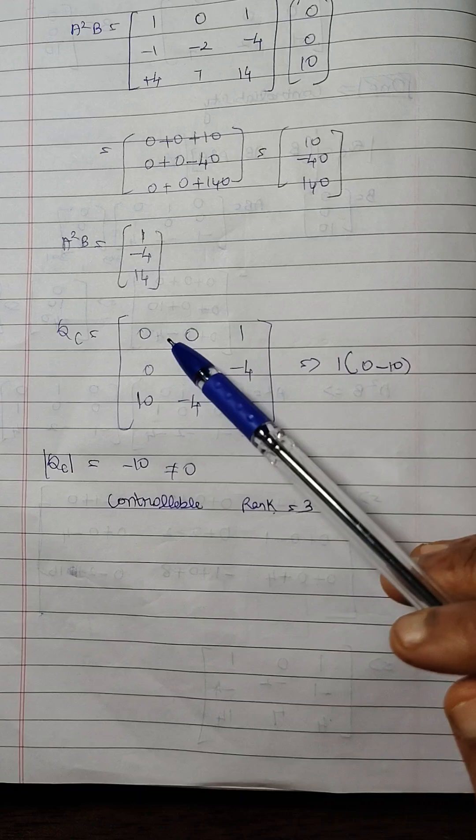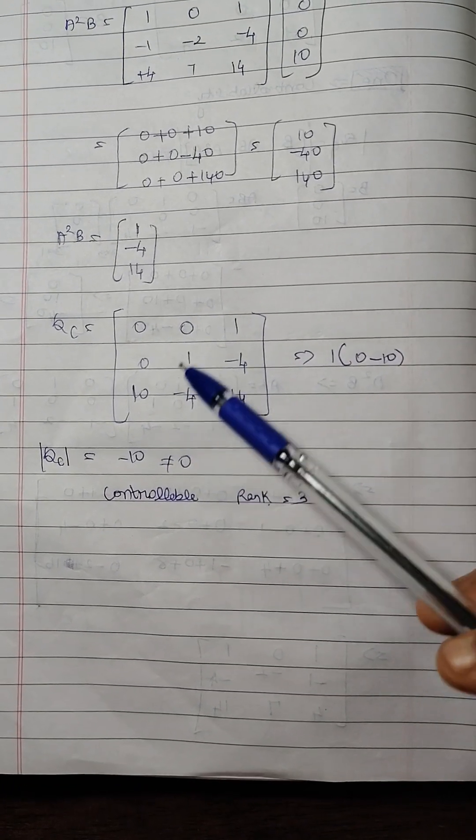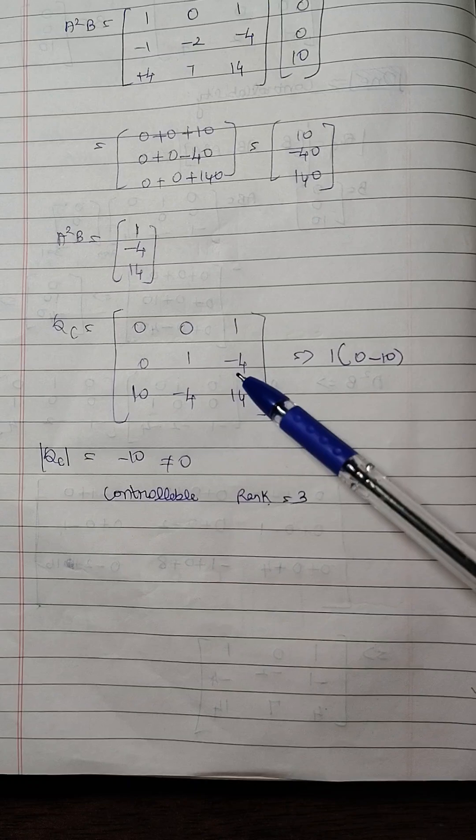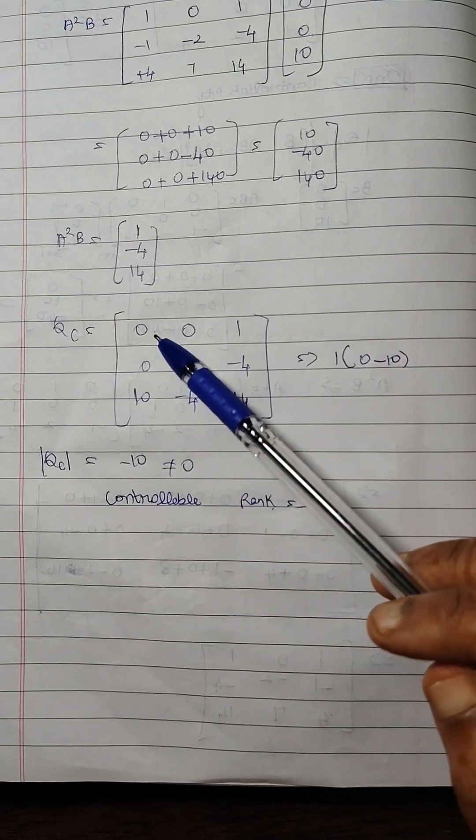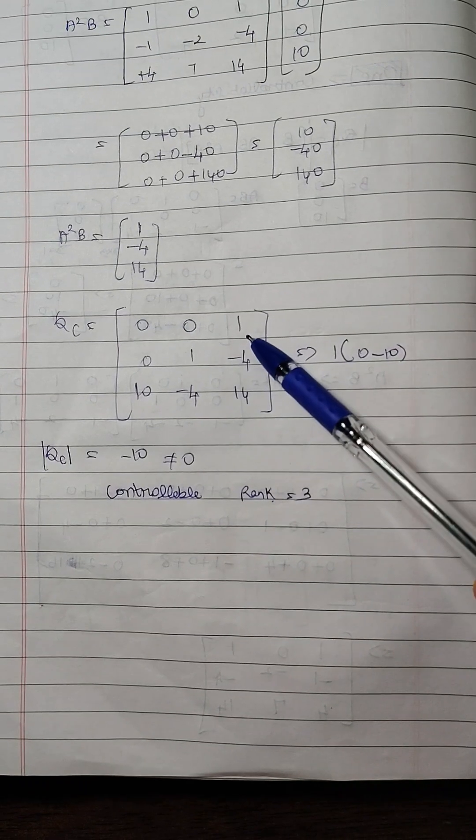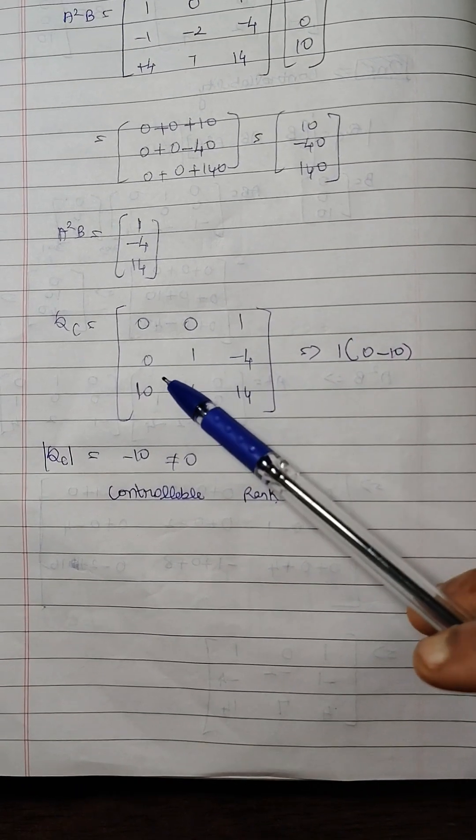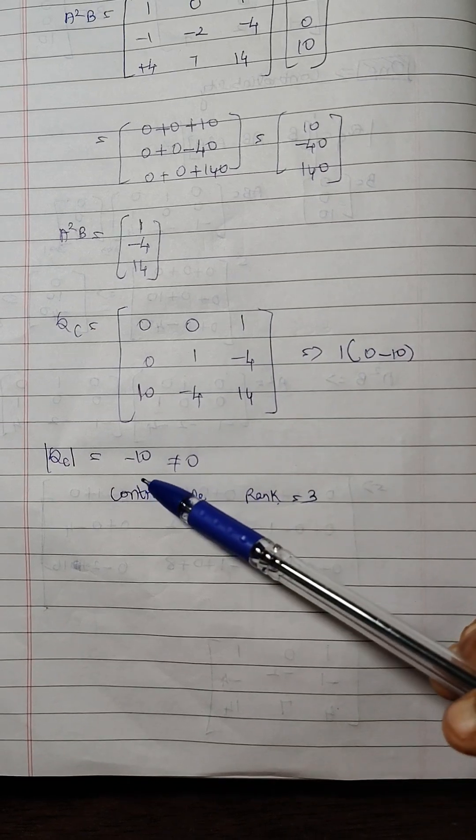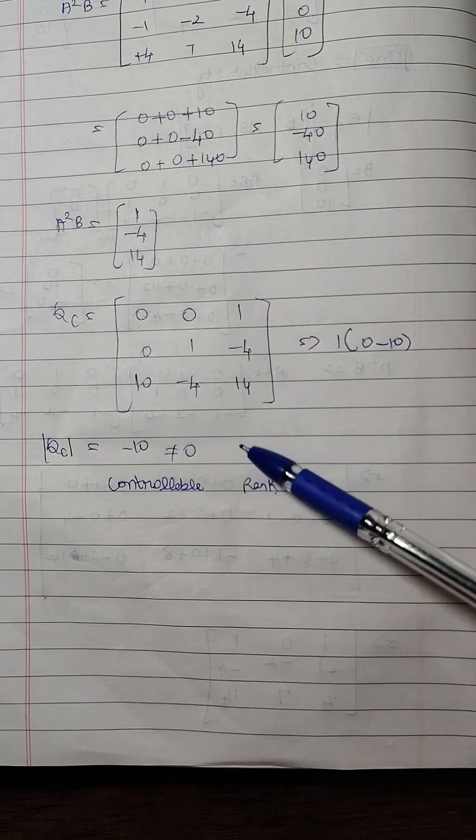What is Q of C? B, A B and A square B. While we are substituting the B, A B and A square B and taking the modulus of this, this will be 0, this will be 0 and only 1 remains. 1 into 0 minus 10. The answer will be minus 10.